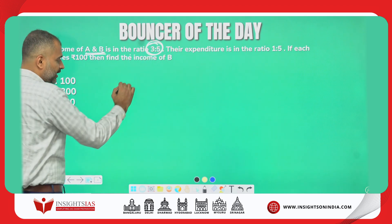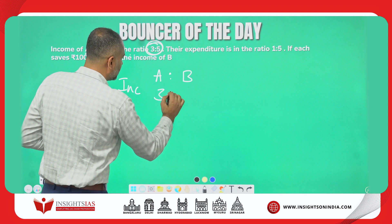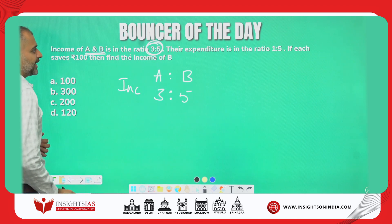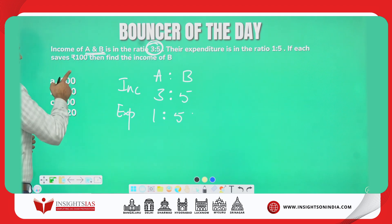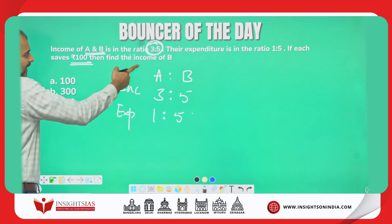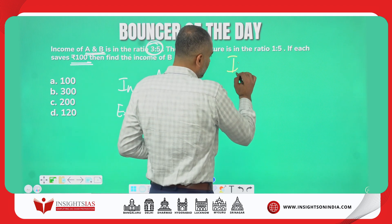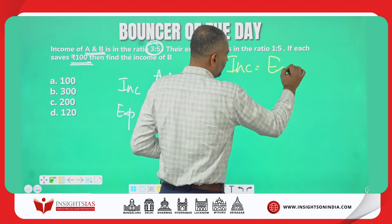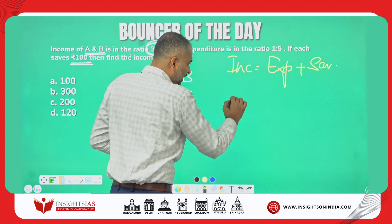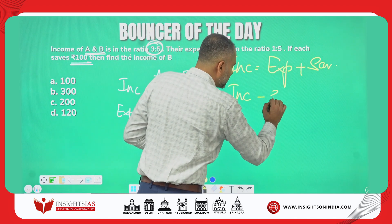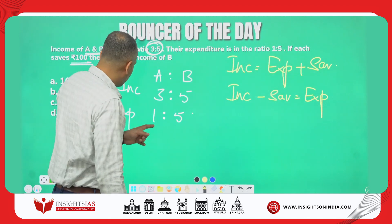Income of A and B is in the ratio 3:5, their expenditure is in the ratio 1:5, and each person is saving ₹100. Find the income of B. Now, income equals expenditure plus savings — if I subtract savings from income, I get the expenditure.